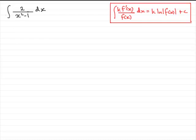So what type is it? Well, the next check I would do is to see whether the denominator factorizes. And it does. This is the difference of 2 squares.